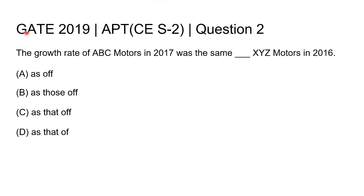Hello everyone, this question is from GATE 2019 Civil Engineering Set 2, question number 2. The sentence is: 'The growth rate of ABC motors in 2017 was the same blank XYZ motors in 2016.' The four options are: (A) as of, (B) as those of, (C) as that of, and (D) as that of. We have to choose the right option to fill in the blank.